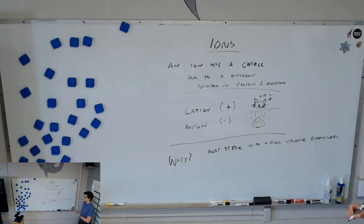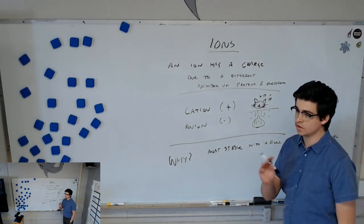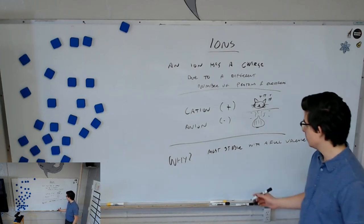Orbital's kind of an old-timey word. Most stable with a full valence energy level. So, for most of them, what is a full valence energy level? We talked about the electric configuration. Yeah, for most of them, it's eight. However, for two elements, it's a different number. Hydrogen. And?